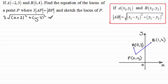This equals the distance BP. That's the root of (x - 1) all squared plus the difference between the Y coordinates all squared, which is (y - 4) squared.